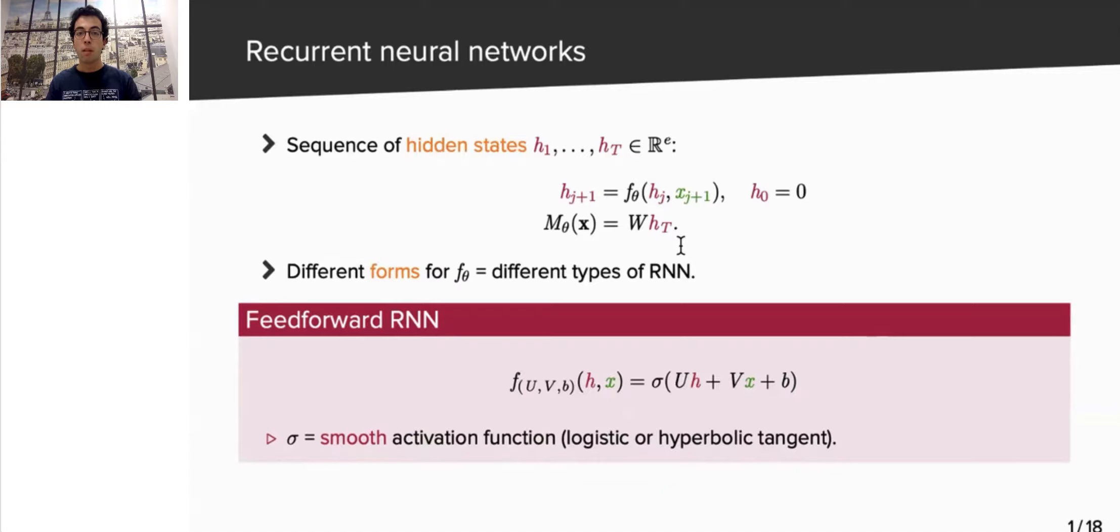Then, the output of the network, m_theta of X, is a linear projection of the last hidden state. There are several possibilities for the update function f_theta, the simplest one being the feedforward RNN, where f_theta simply consists in a single hidden layer. Here, we have to take a smooth activation function, as we need higher-order derivatives to be well-defined in the following.